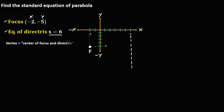To find the vertex, since the vertex is the center of the focus and directrix, we need to find the midpoint between the focus and the directrix. We'll use the counting method — starting from the focus point and counting to the directrix: 1, 2, 3, 4, 5.